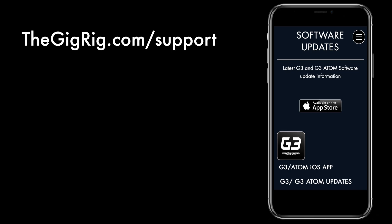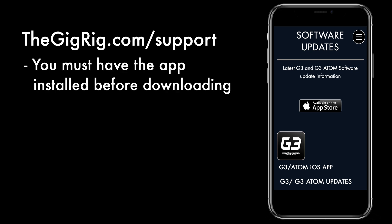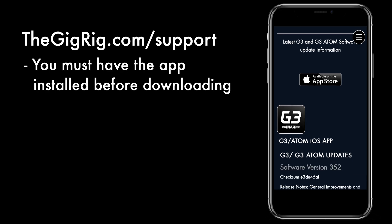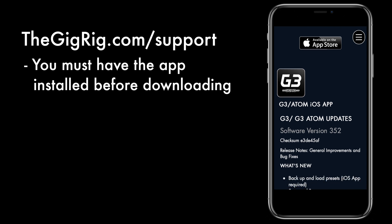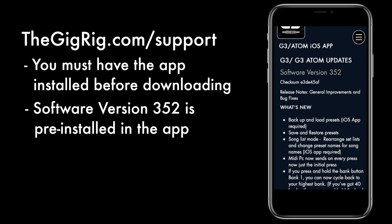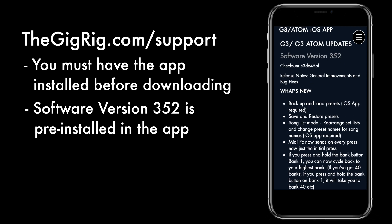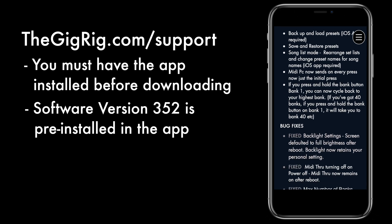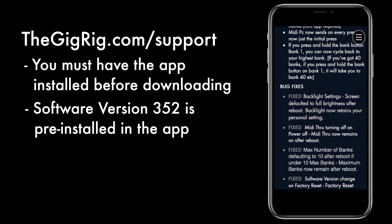On your iOS device, head to gigrID.com forward slash support. Remember, you must have the app installed before you download anything. It's worth noting that software version 3.5.2 comes pre-installed in the app, so most people will be updating to 3.5.2. You don't need to download anything — it's pre-installed in the app.